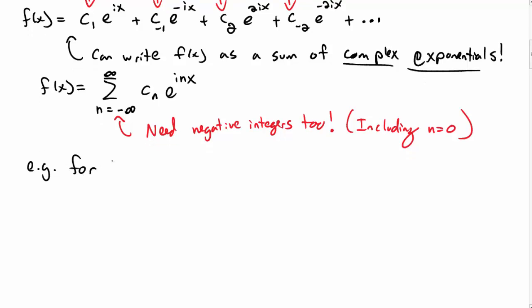As an example, for our function that we had above, f(x) is x with a period of 2π. We can write the coefficients c_n in general as -(-1)^n/(in) if n is not equal to 0, and it's actually 0 if n is equal to 0. Don't forget that n equal to 0 term.